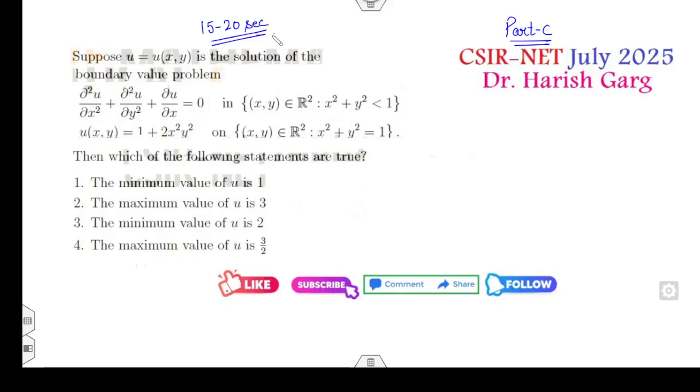Now read the statement: suppose u is the solution of the boundary value problem on the circle such that u is 1 plus 2x²y² on the boundary of the circle, and for the other case it will be 0. Then which of the following statements are true? Your target is to find the minimum value, maximum value, very simple.